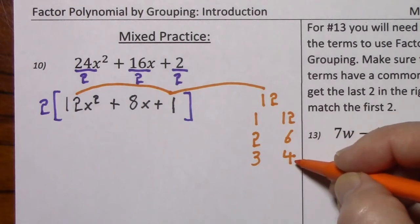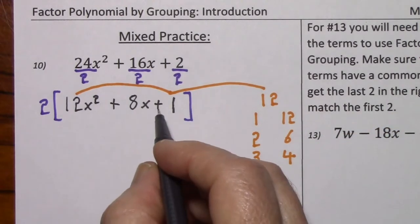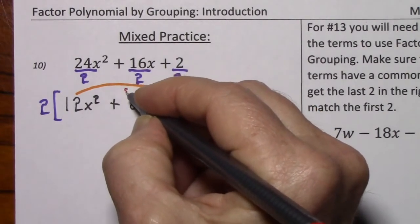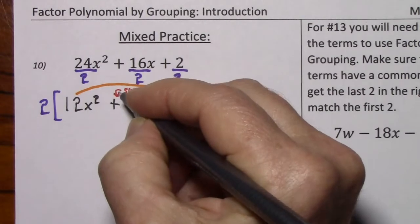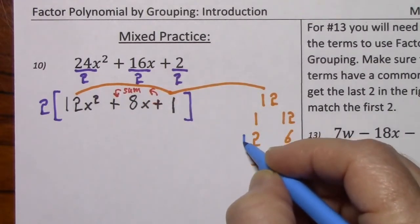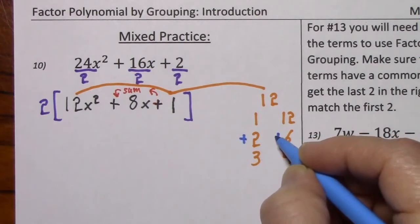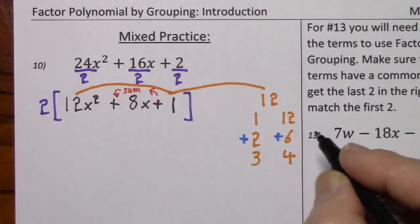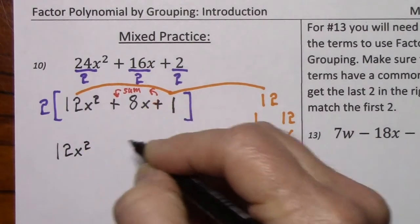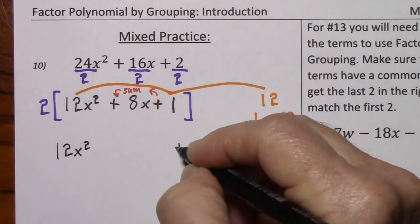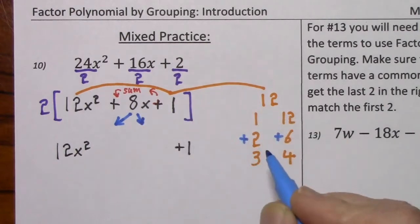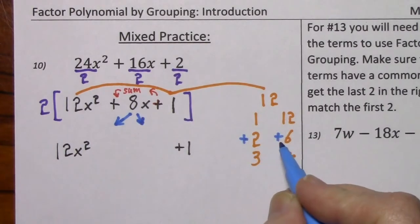Here are all the factor pairs. Noting that the last term is positive, we're looking for a sum of positive 8. Looking at our list, if we had a positive 2 and a positive 6, we would get positive 8. So we keep the first term, keep the last term, and rewrite the middle term as positive 2x, positive 6x.